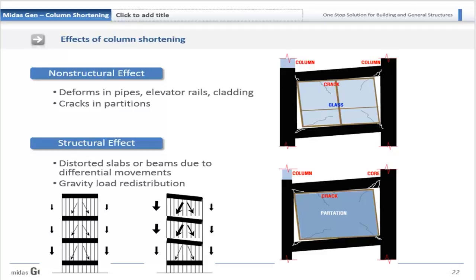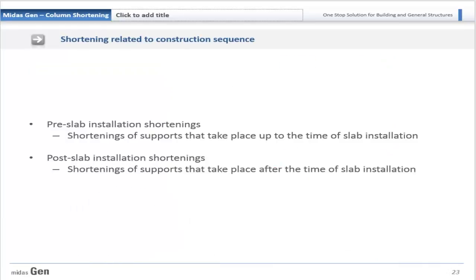Looking at issues due to column shortening, both non-structural and structural effects occur. Non-structural effects include deformations in pipes, elevator rails, claddings, and cracks in partitions. Structural effects include distortion of slabs and beams due to differential movements, and gravity load redistribution due to differential shortening. There are two shortening results: pre-slab installation shortening — shortening that takes place up to the time of slab installation — and post-slab installation shortening, which is shortening of supports that takes place after slab installation.